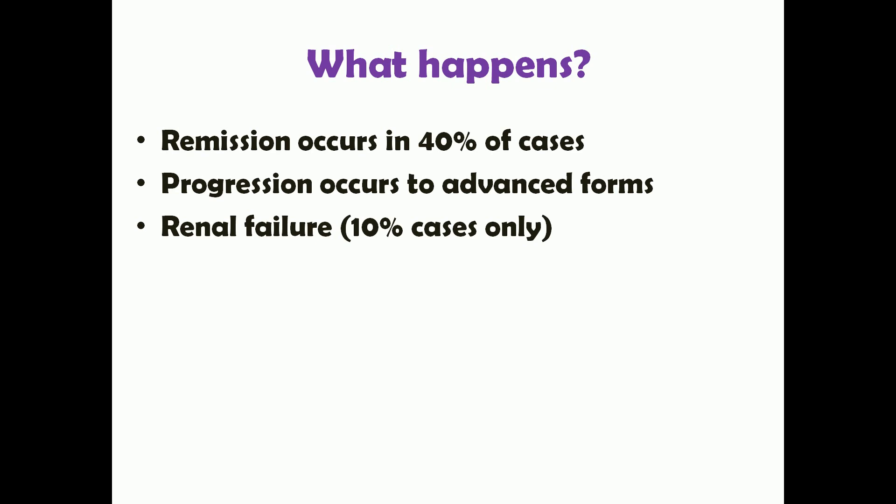If the antigen is exogenous — for example an external drug or an infection — treating the cause or removing the offending agent may lead to improvement. In primary membranous nephropathy, remission may occur in about 40% of cases. However, progression to advanced forms like glomerulosclerosis can occur in many patients. Progression to very severe stages such as renal failure is rare, occurring in only about 10% of patients.